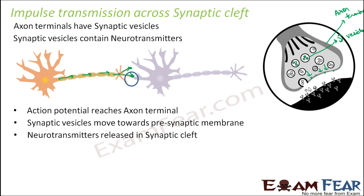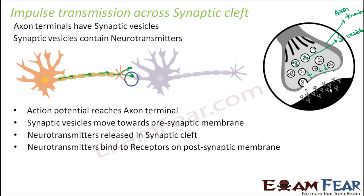The neurotransmitters are chemicals that communicate information. These chemicals will be picked up by their receptors — the neurotransmitters will bind to their respective receptors on the postsynaptic membrane. The receptors on the postsynaptic membrane pick up the neurotransmitters from the synaptic cleft. This binding will then open ion channels, allowing entry of ions which can generate a new potential in the postsynaptic neuron.